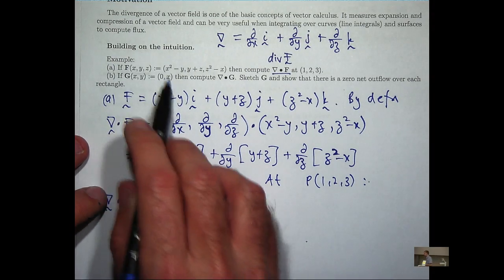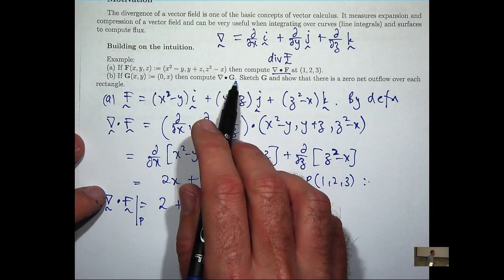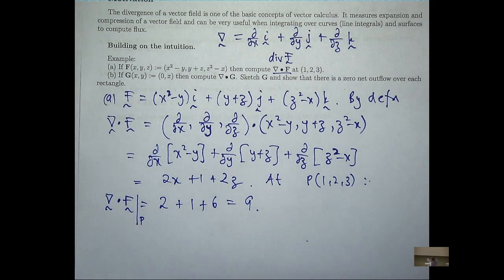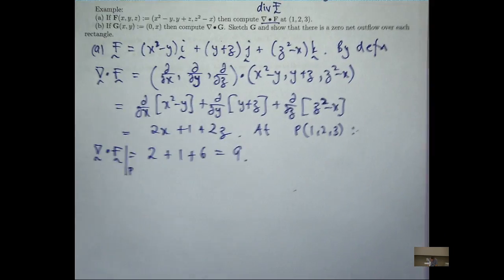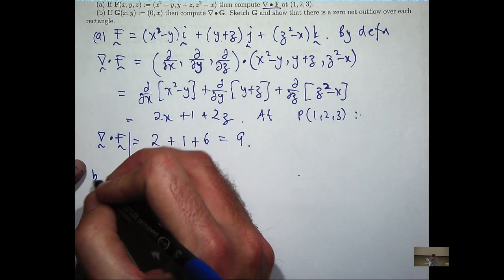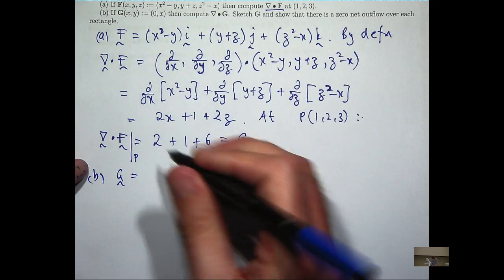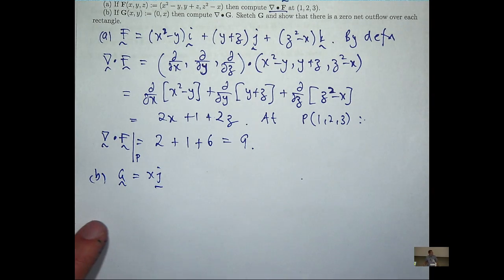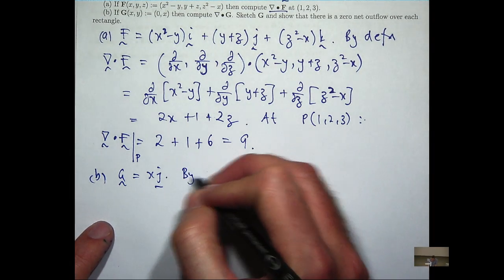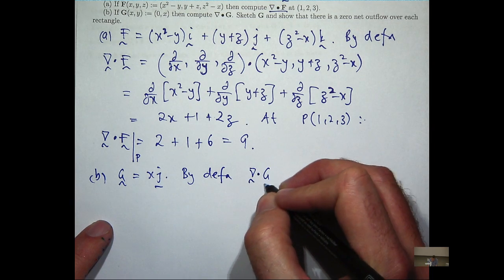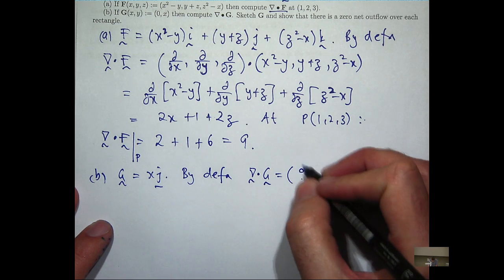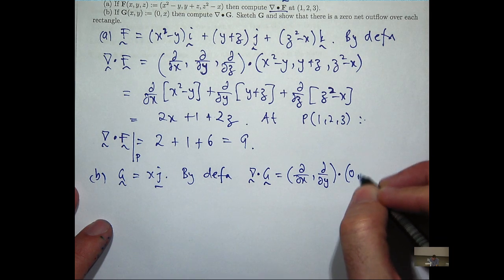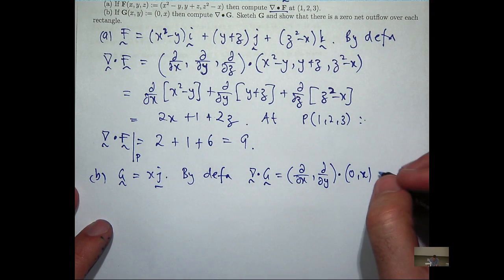In part B, we're given a vector field, but only in the plane. We're asked to compute the divergence and sketch G and show that there's a zero net outflow over each rectangle in the plane. So it'll be 0i + xj in ijk form. All right, so by definition, the divergence of G, just working in the plane here, so I don't need to worry about the ∂/∂z's. So ∂/∂x of 0 is 0, ∂/∂y of x is 0.